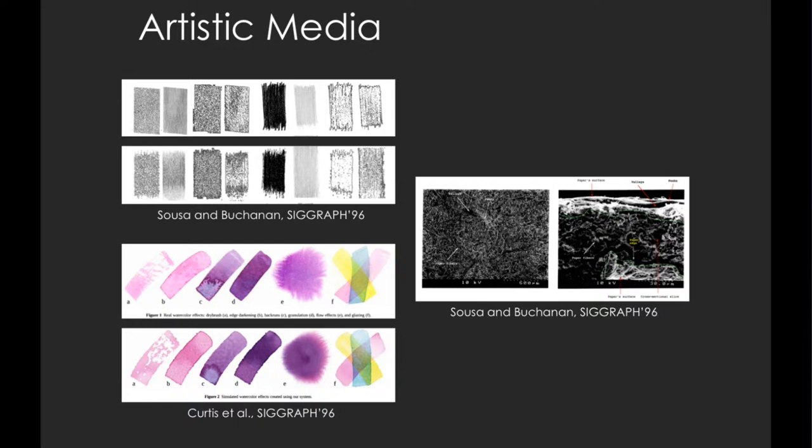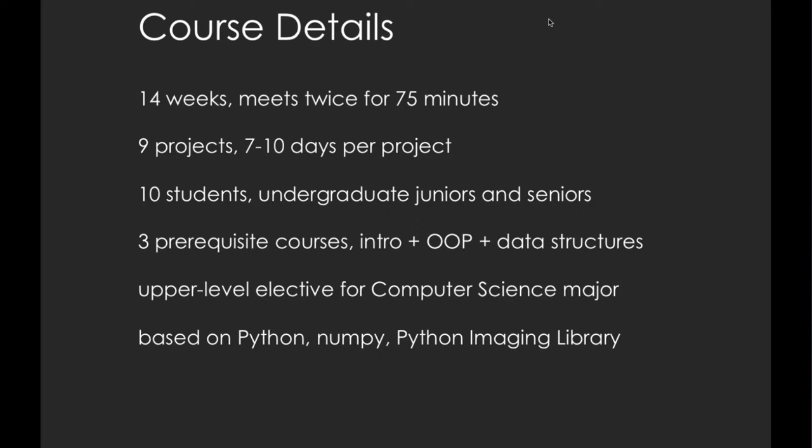To create these artistic effects, researchers have proposed ways to model, for example, the diffusion of watercolor paint on paper, or used observations from electron microscopes to model paper and pencil interactions. This is not an exhaustive list of NPR work, but gives a sense of the range of creative ideas.